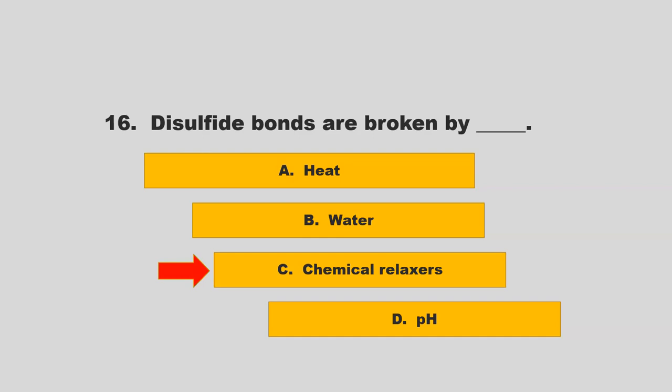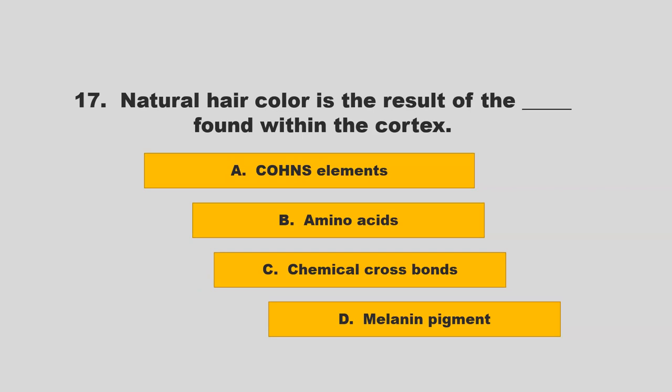Natural hair color is the result of the blank found within the cortex. Is it trace elements, amino acids, chemical cross-bonds, or melanin pigment? If you chose D, melanin pigment, you are correct.